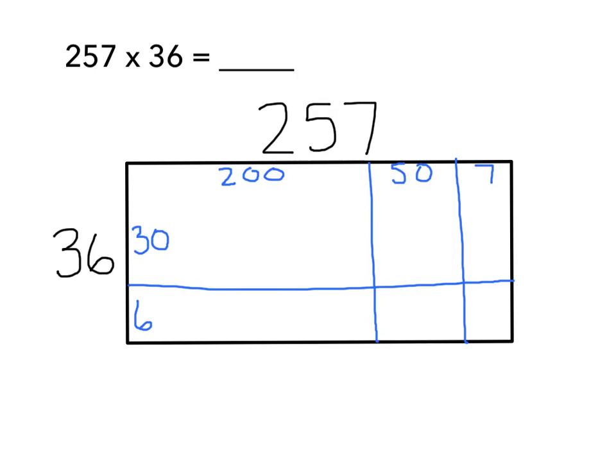So the next thing that I need to do is figure out what are the values of these 6 smaller arrays that I have just created. What are the products? Let's start here. 200 by 30 is this array. So what I want to do is figure out what is 200 times 30. I know that 2 times 3 is 6, and therefore 200 times 30 is 6,000.